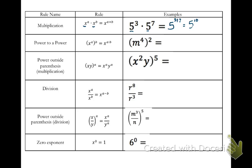Pause your video and copy down the next row. This row is power to a power. The rule is x to the a, all to the b — you multiply your two exponents together. Notice there are parentheses in this one. A lot of people get multiplication and power to a power mixed up, so notice the difference. In our example, m to the fourth squared gives us m to the 4 times 2, so m to the 8.